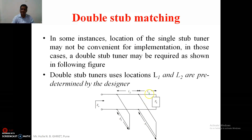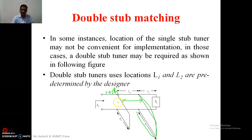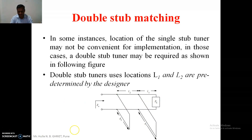In double stub matching, the location of the first stub from the load and the distance between the two stubs are important. We always take stub number two as the reference, because at stub number two we have the load admittance as 1 + jB. That's why the portion after stub two remains matched, and the portion before remains unmatched.